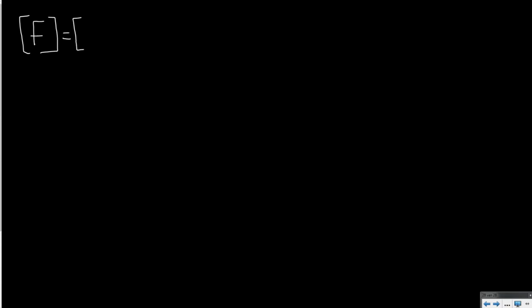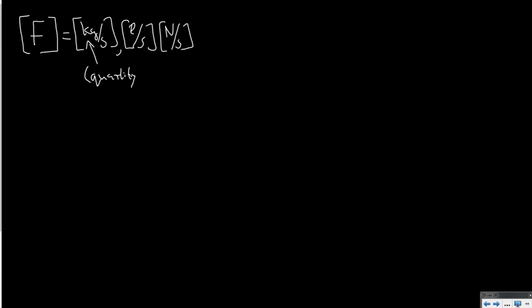The dimensions of fuel flow can be expressed either in kilograms per second, liters per second, or newtons per second. The most important thing is that it is about a quantity of fuel burned per second. So if we have a given amount of fuel on board, we should minimize the fuel flow in order to have maximum endurance.